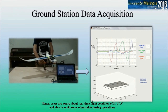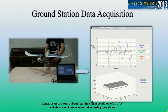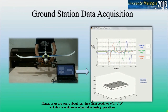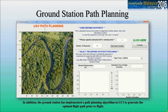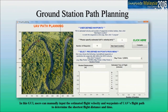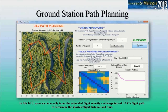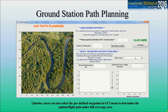Hence, users are aware of the real-time flight condition of HUAV and able to avoid mistakes during operation. In addition, the ground station has implemented a path planning algorithm in the GUI to generate the optimal flight path prior to flight. Users can manually input the estimated flight velocity and waypoints of the UAV's flight path to determine the shortest flight distance and time. Likewise, users can also select predefined waypoints in the GUI menu to determine the optimal flight path under full coverage area.